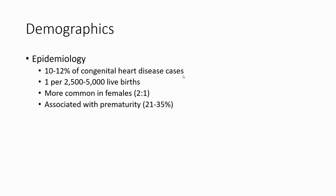Epidemiology: PDA accounts for 10 to 12% of congenital heart disease cases, with an incidence of 1 per 2,500 to 5,000 births. It is more common in females at a 2-to-1 ratio, and is associated with prematurity in up to 21 to 35 percent of cases.